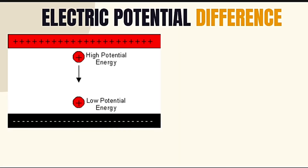We mentioned electric potential difference. How do we define electric potential difference? It is simply the difference in the electric potential between the final and initial position when work is done upon a charge to change its potential energy. For example, a charge initially at the high potential energy region — the positive side — then moves or is repelled toward the low potential energy region.